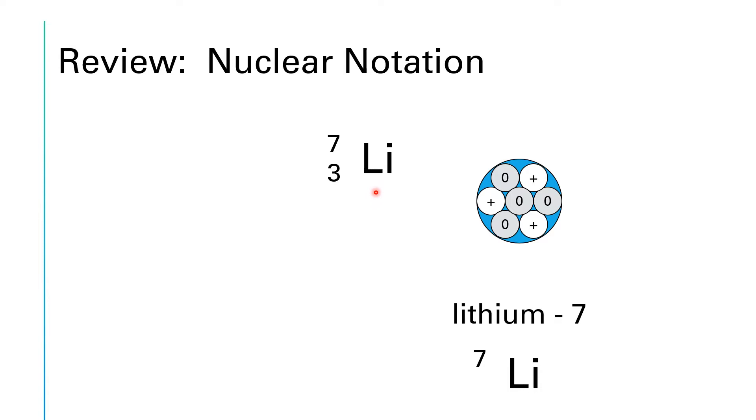So sometimes this first notation gets shortened to what's down at the very bottom, which is the 7 without the 3, Li, because the 3 and the Li are redundant. That's also why when we use the form where the name is written out as a word, dash, and number, we're only given the 7, not the 3. So that 3 is the atomic number. It's the number of protons. So what in the world is the 7?